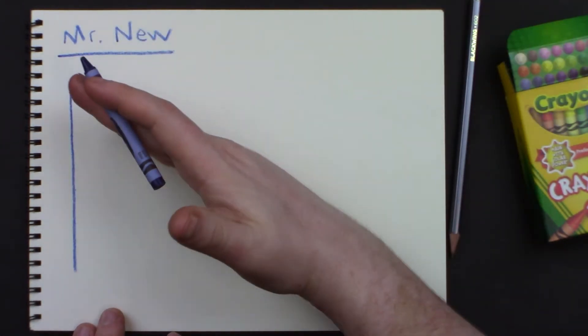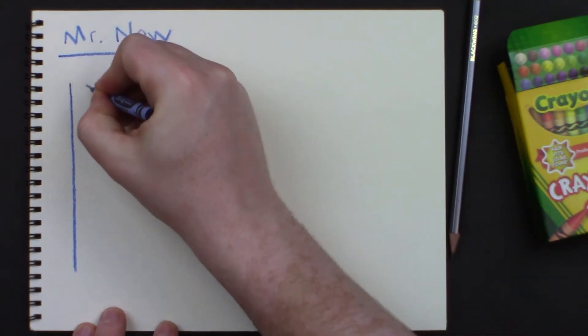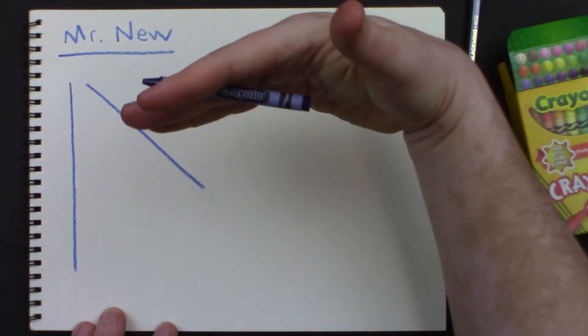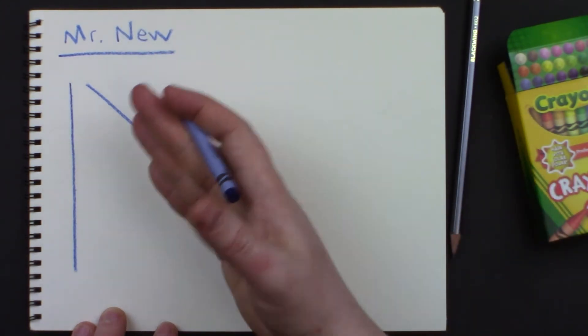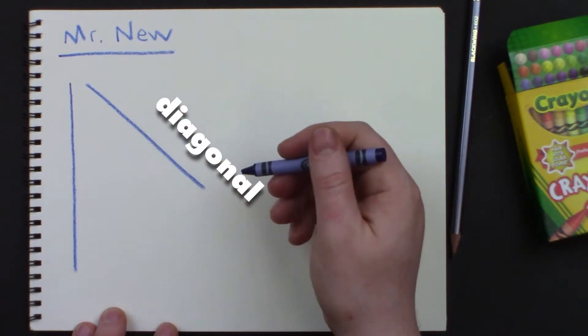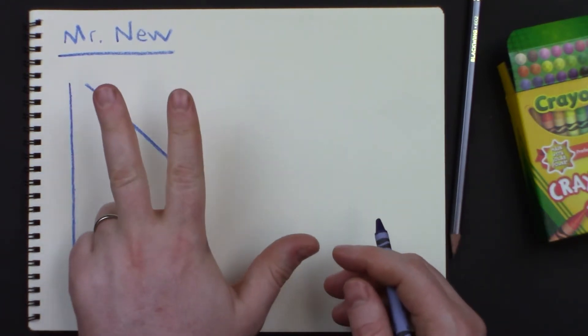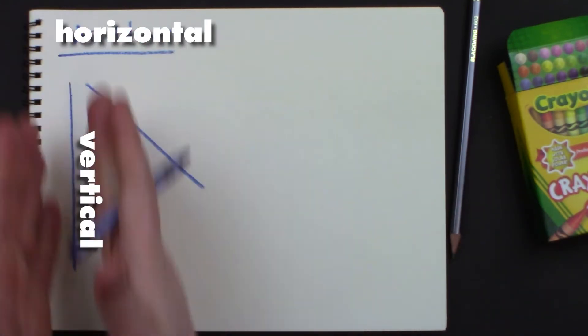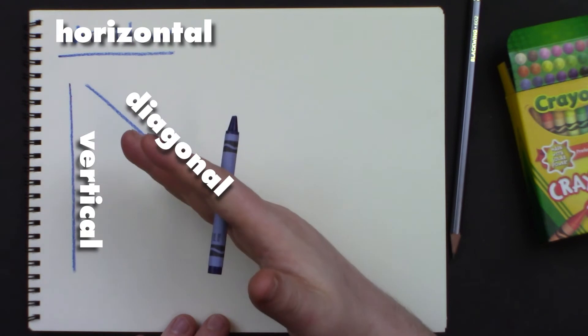What do you call a line that goes in between? Make a line that goes in between. It's not vertical, it's not horizontal, it's in between. That's what we call diagonal. So right away, there's three big words that we need to remember: horizontal, vertical, and diagonal.